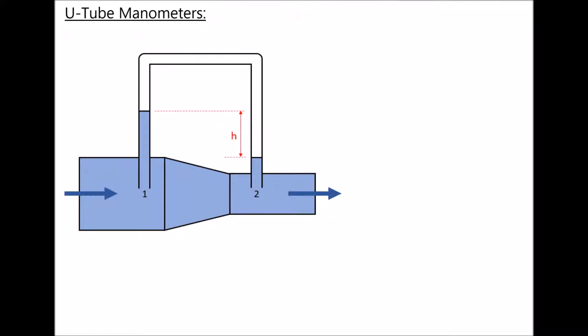This particular device is going to be used to measure the change in pressure of a liquid flowing through a duct. This might be used to measure a pressure loss as water flows through a valve or an orifice, or it can be used to determine the change in velocity of the fluid as it goes through the converging section of the pipe. We will see various other applications when we begin to look at Bernoulli's equation in later learning outcomes.